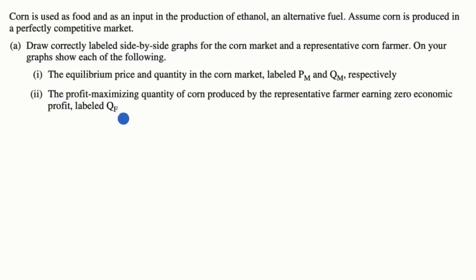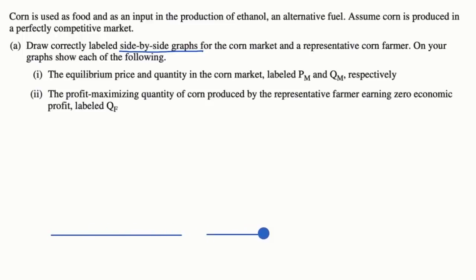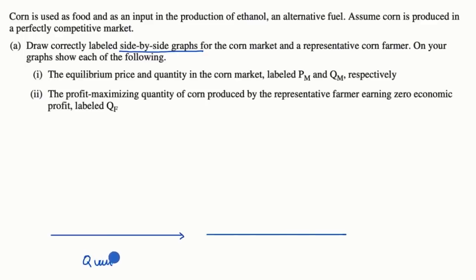Now let's work through it together. We're going to do correctly labeled side-by-side graphs. This horizontal axis is for the market and this horizontal axis is for the farmer. This is quantity in the market, and this is quantity for the farmer.